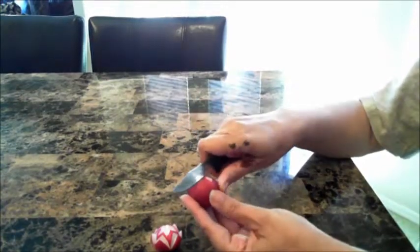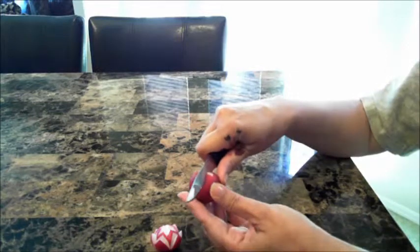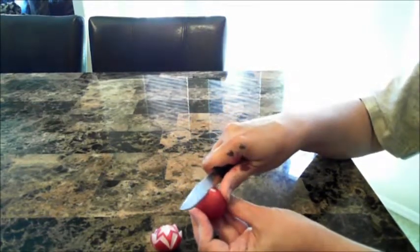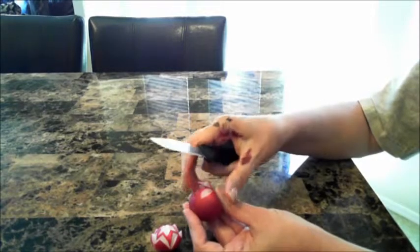First, you cut on top diagonally just a little bit, and cut again from the other side, opposite side. Remove that piece.